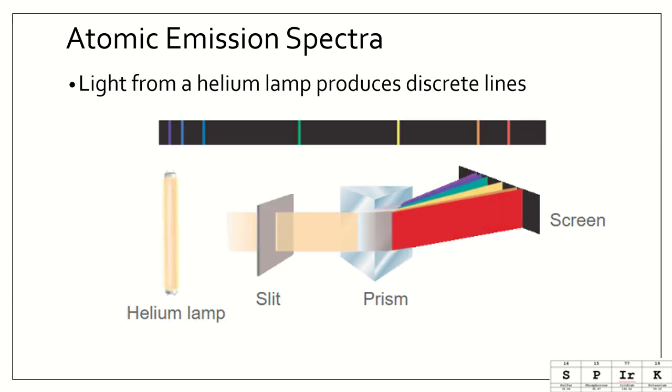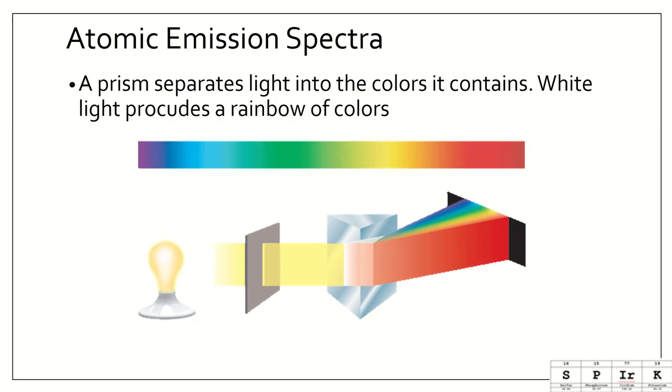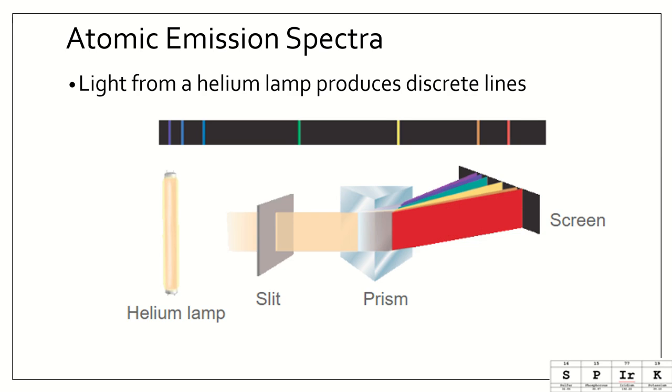However, when we look at specific elements in gas tubes, like here we're looking at a helium lamp, we see that it is not a spectrum of lines. Look how this is more like a smear of a rainbow of color. And here we have discrete lines. So, we're going to look at this in a lab later this week. You can see that it's sort of this orange color, the helium lamp. And as it passes through the prism, we see these are its component colors. And they are in very specific places.